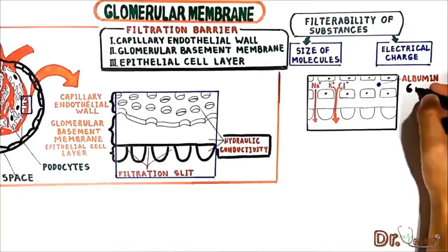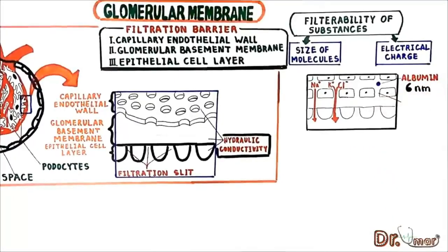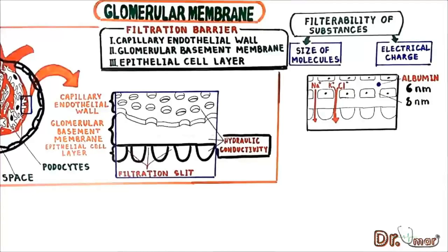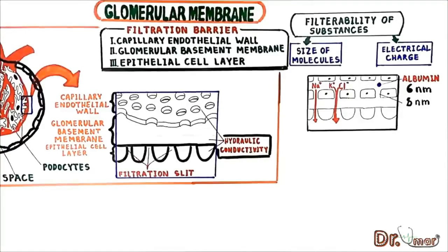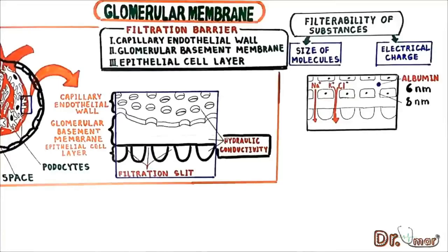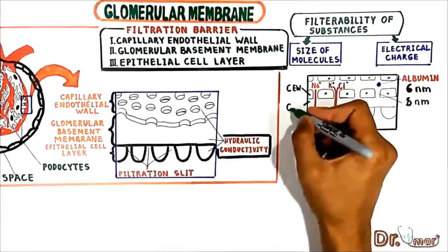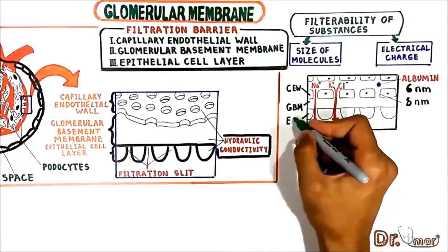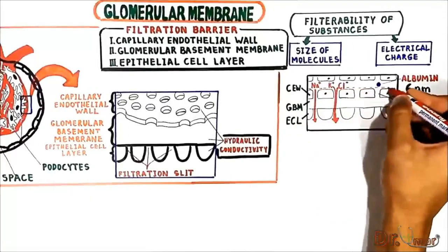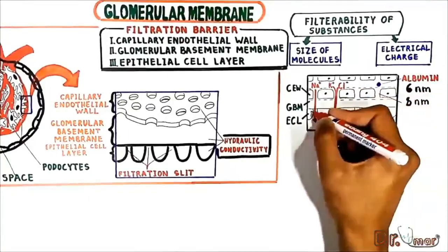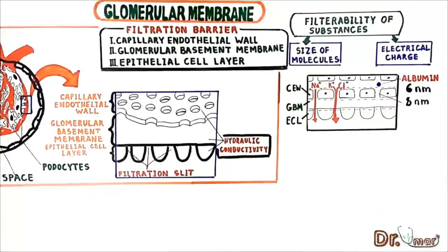The molecular scale diameter of the plasma protein albumin is only about 6 nanometers, whereas the pores of the glomerular membrane are thought to be about 8 nanometers. Although albumin's size allows it to be filtered, it is not filtered through the glomerular membrane. This is because all three layers — capillary endothelial wall, glomerular basement membrane, and epithelial cell layer — have a negative charge, which does not allow albumin, which also has a negative charge, to be filtered.